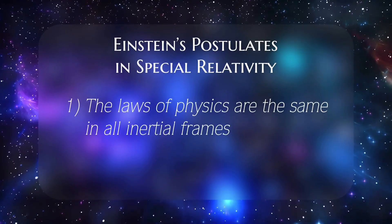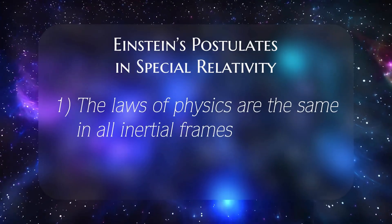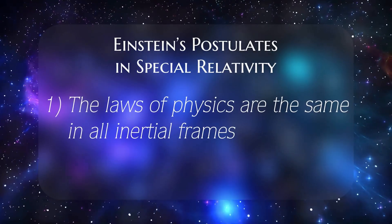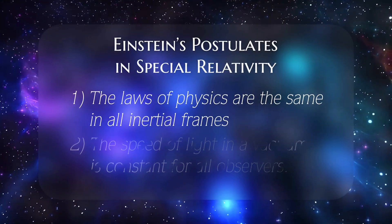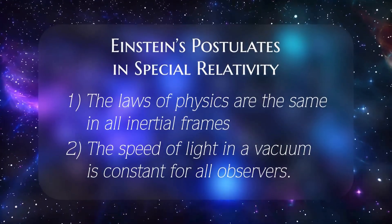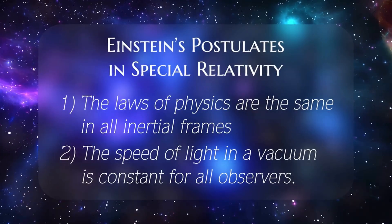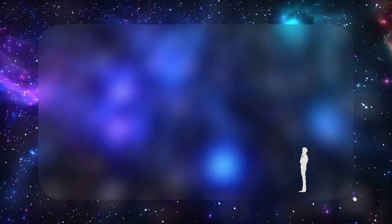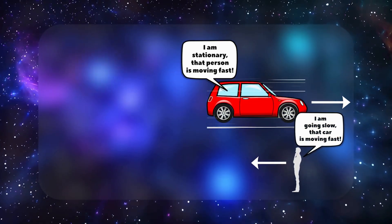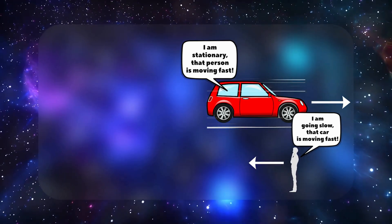This baffling fact led Einstein to propose two radical postulates in special relativity. First, the laws of physics are the same in all inertial frames. That is, if you're moving at a constant velocity, the usual physics still applies. And second, the speed of light in a vacuum is constant for all observers. Those simple statements forced us to abandon the idea of absolute time and absolute rest. Instead, each observer measures distance and time based on their relative motion, which can differ from someone else's measurement.